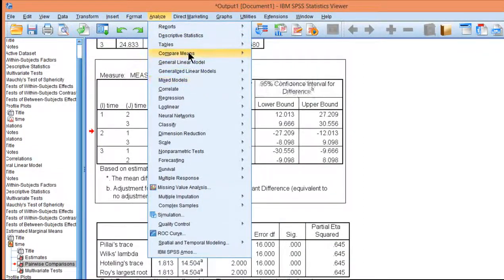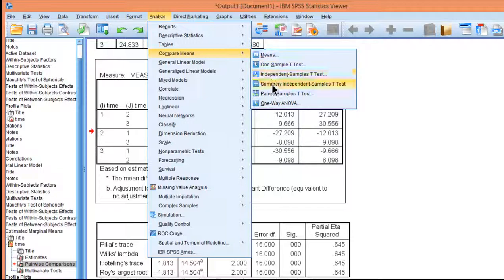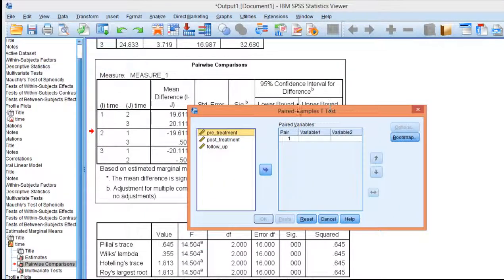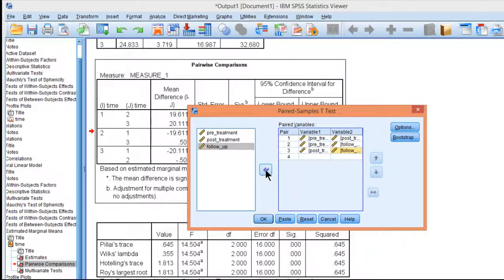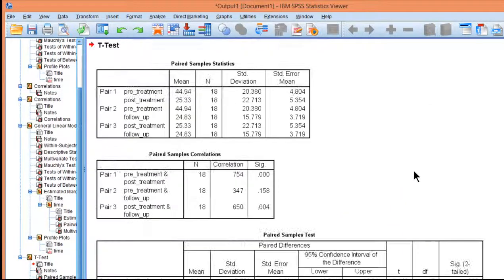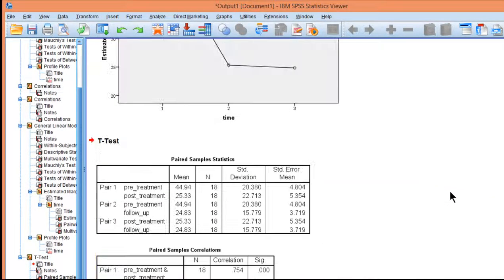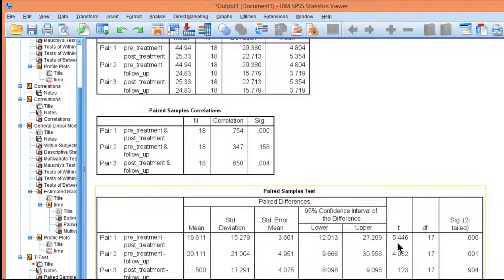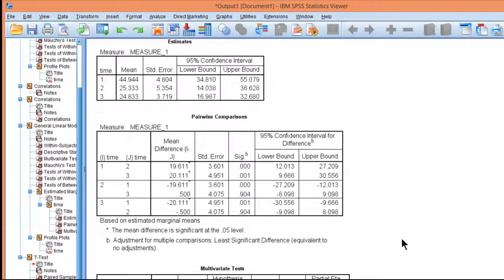And I just want to briefly point out that if you do all the paired sample t-tests instead of doing the Fisher's LSD, you could technically do all the paired t-tests—post-treatment versus follow-up, the three paired t-tests—and you get the same results. You don't actually get the t-values up here, but you get the p-values, and you can see that the difference is nothing in terms of the p-values.